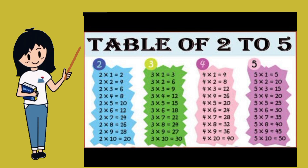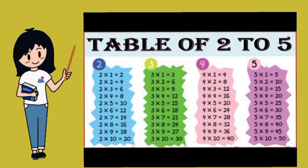Three sixes are eighteen. Three sevens are twenty-one. Three eights are twenty-four. Three nines are twenty-seven.